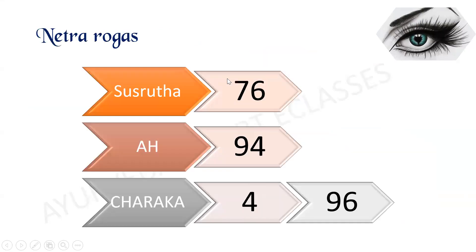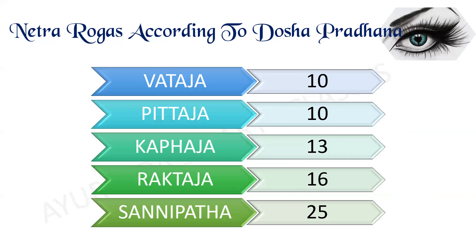Netrarogas: Sushruta mentions 76, Ashtanga Hridaya mentions 94, and Charaka mentions 4 types as well as 96 types of Netrarogas. According to Doshapradhana: Vataja Netraroga — 10, Pittaja — 10, Kaphaja — 13, Raktaja — 16, and Sannipata — 25.